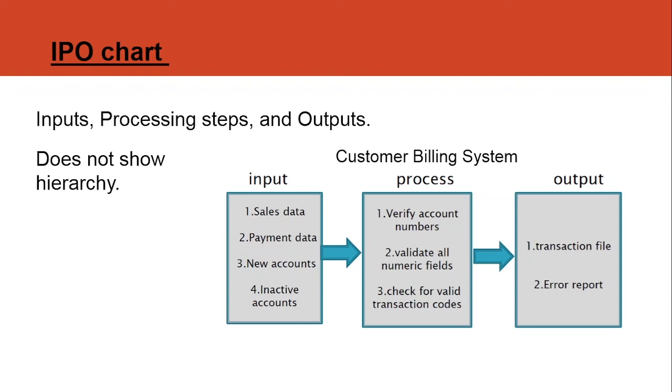And it is clear that the IPO chart are used for input-output analysis. As you can see on the example, the input, let's say sales data or payment data, the sales data will be processed on how the sales data will be processed. And you come up with the output, let's say the transaction file. You can also include the reports, the list of reports, inventory reports, just like that.